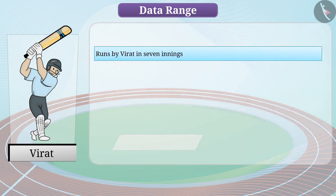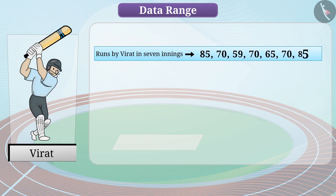We would need to list out the number of runs scored by Virat in some of his innings. Let's say the number of runs scored by Virat in his 7 innings are 85, 70, 59, 70, 65, 70, 85. This essential numerical information can be referred to as data and each number can be referred to as an observation.